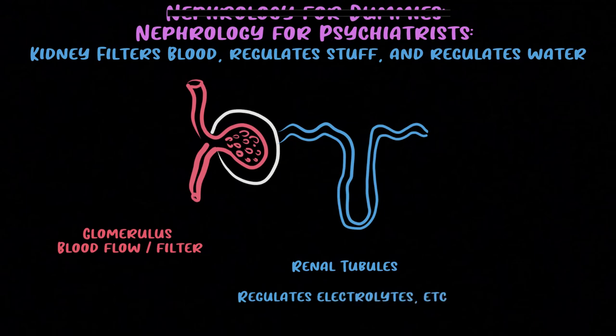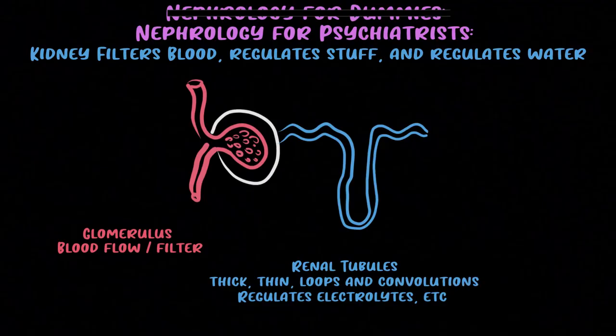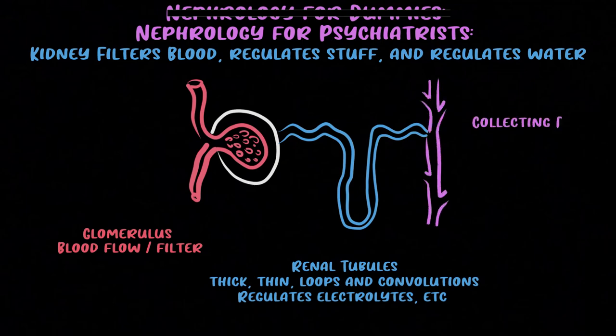The second part is the renal tubules, where the kidney handles electrolytes, salt, glucose, bicarb, and uric acid — secretion and absorption. There are limbs, loops, thin and thick sections, but I never remember any of that. The third part is the collecting duct, which regulates water. So: glomerulus for blood flow, tubules for electrolyte filtration, and collecting duct for water.